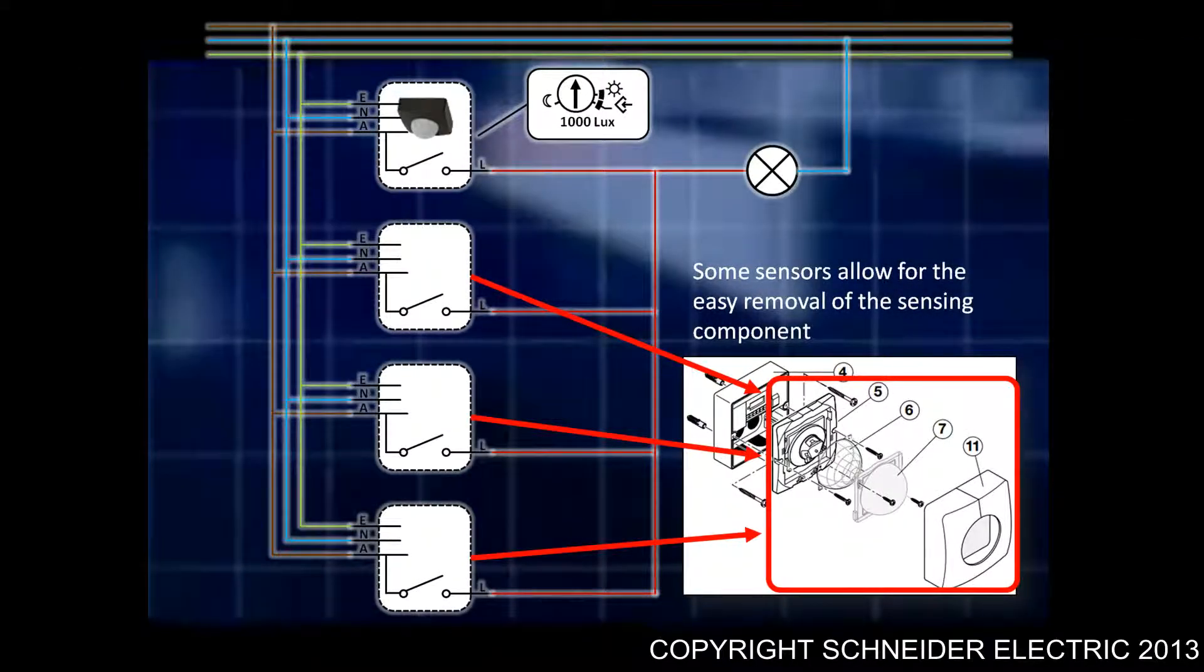The best way of fault-finding multiple circuits, if you suspect incorrect programming, is by removing all of the sensors but leaving one. Program that sensor up as you normally would and test the functionality. Some of the Clipsal sensors have a removable sensor head, which allows for testing to be relatively easy.